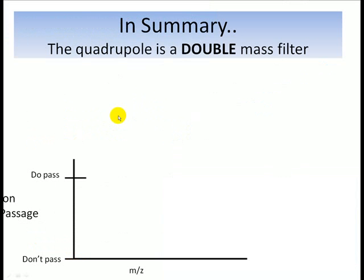To summarize, the quadrupole is actually a double mass filter. You've got these two pairs of rods, orthogonal directions at 90 degrees to each other. So we can talk about the way it works quite nicely with a graph that looks like this, which talks about passage of ions here on the vertical axis. It's basically talking about whether the ions don't pass or do pass. It's kind of like a binary thing, 0 or 1. We're talking about whether or not the ions make it through as a function of their mass charge ratio.